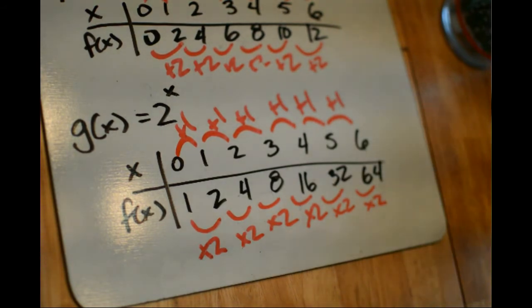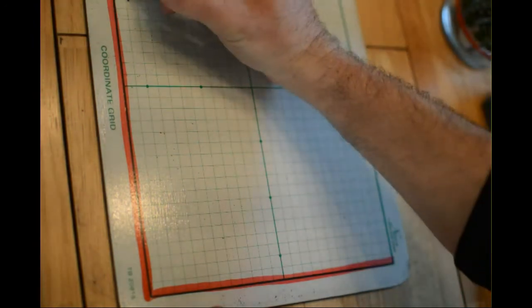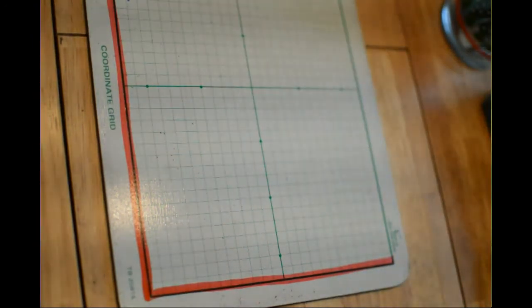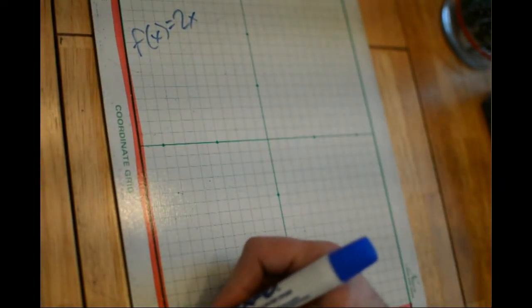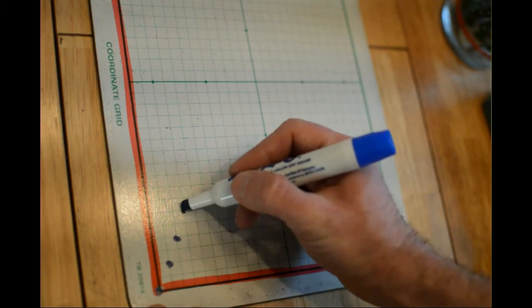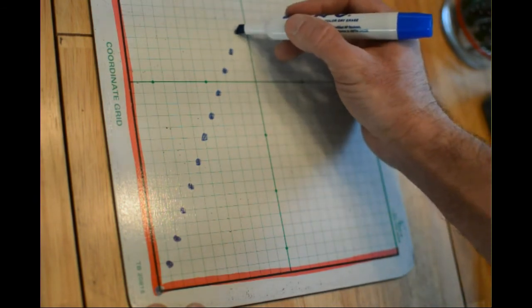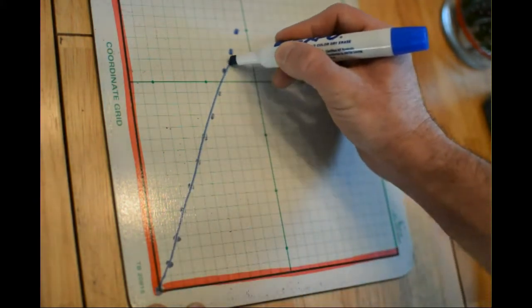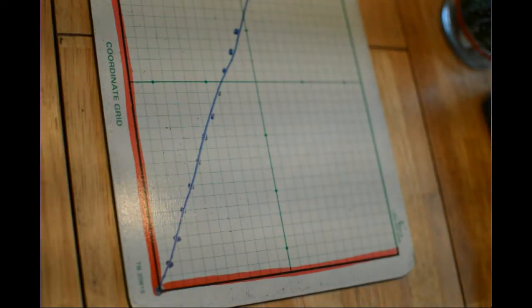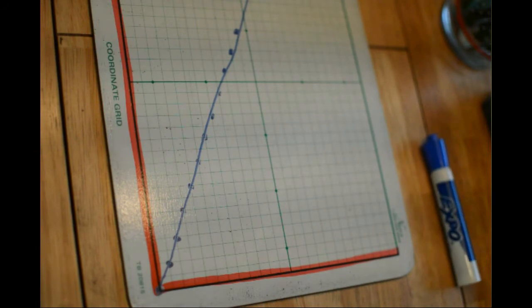Let's take a look at what these will look like graphically. Here I've got my graph and I'm going to plot these two functions. f of x equals 2x: when x is 0, f of x is 0; when x is 1, f of x is 2; when x is 2, it's 4 — so we basically have a slope of 2. This is what a linear function looks like: a straight line with a constant rate of change, increasing by the same amount every time. It's like driving down the highway at the same speed — moving along at a constant rate.